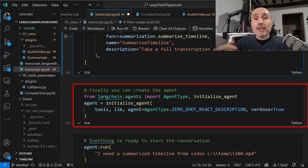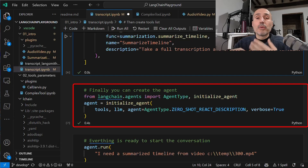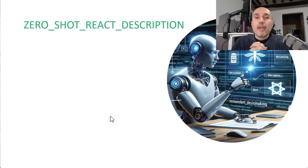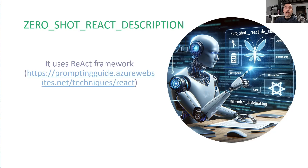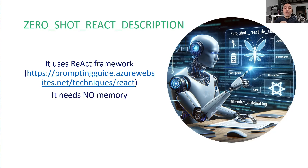The verbose true parameter is important because it allows the agent to dump nice information in the UI, showing you what is going on. The zero-shot ReAct description agent is based on the ReAct framework. It needs no memory — no database, nothing else to work. It just proceeds step by step in an interaction with the large language model.